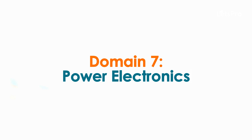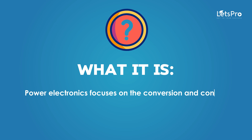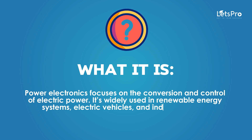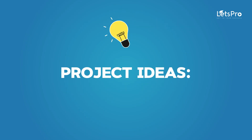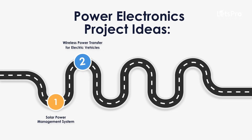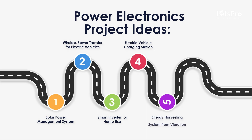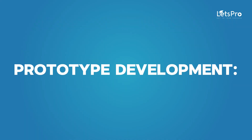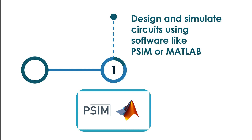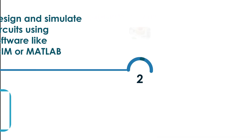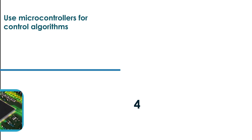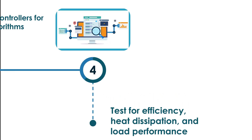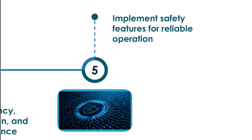Domain 7: Power Electronics. Power Electronics focuses on the conversion and control of electric power. It is widely used in renewable energy systems, electric vehicles, and industrial power management. Project ideas include: solar power management system, wireless power transfer for electric vehicles, smart inverter for home use, electric vehicle charging station, and energy harvesting system from vibration. For prototypes, design and simulate circuits using PSIM or MATLAB, build hardware prototypes using power electronic components, use microcontrollers for control algorithms, test for efficiency, heat dissipation, and load performance, and implement safety features for reliable operation.